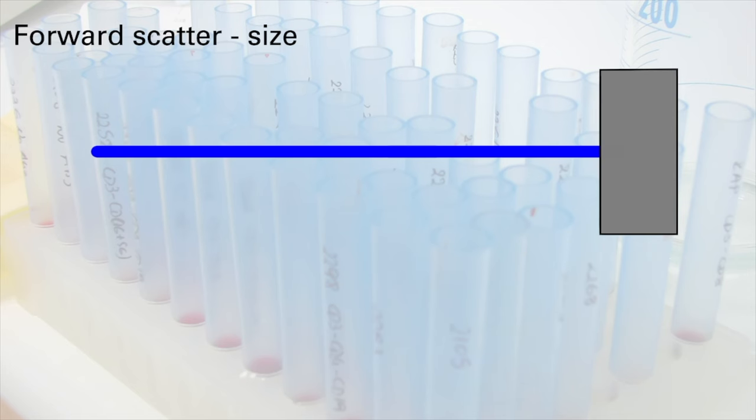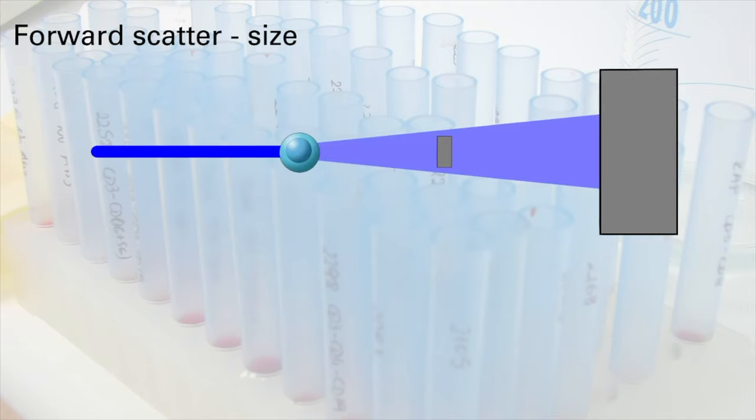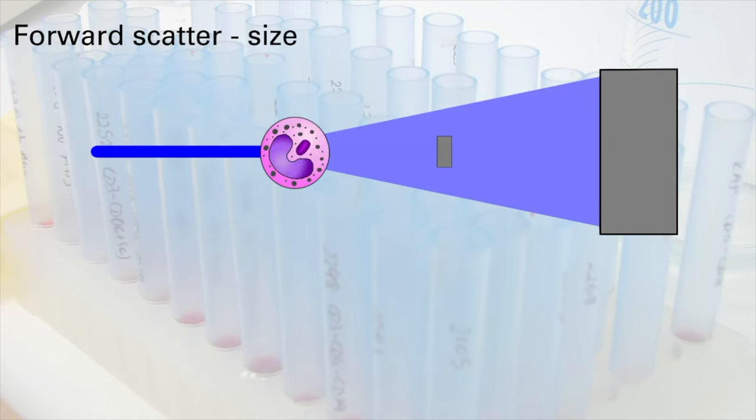Looking at forward scatter first, which is a measure of cell size, we call this forward scatter because the detector for this parameter is placed in front of the plane of the laser beam. To prevent the detector from being blinded by the laser shining directly on it, a filter is placed directly in front of the laser to prevent it from reaching the detector. When a cell enters the path of the laser, it causes the light to scatter, and the light from the laser that is scattered around the filter can be detected by this forward scatter sensor. The bigger the cell, the greater the degree of scattering. So the amount of forward scatter is proportional to the diameter of the cell and is primarily due to diffraction around the edges of the cell.